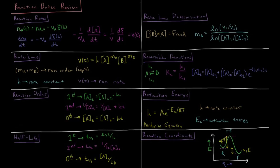If we have some reactant A, it has some number of moles as a function of time, which is equal to the initial number of moles minus its stoichiometric coefficient times the extent of reaction — as defined in the equilibrium chapter — as a function of time. So the derivative of the number of moles of A with respect to time is equal to minus the stoichiometric coefficient times the derivative of the extent of reaction with respect to time.